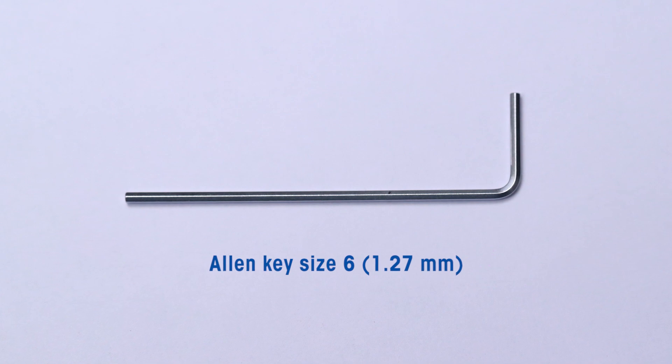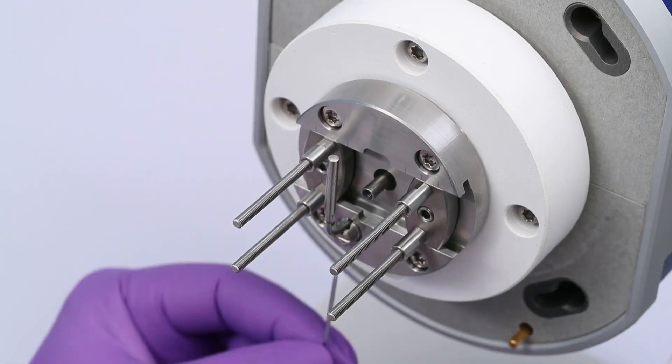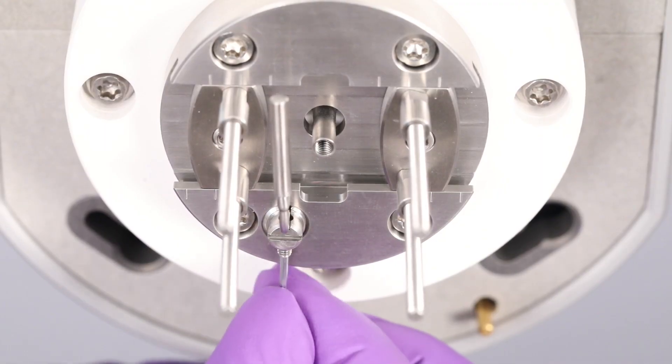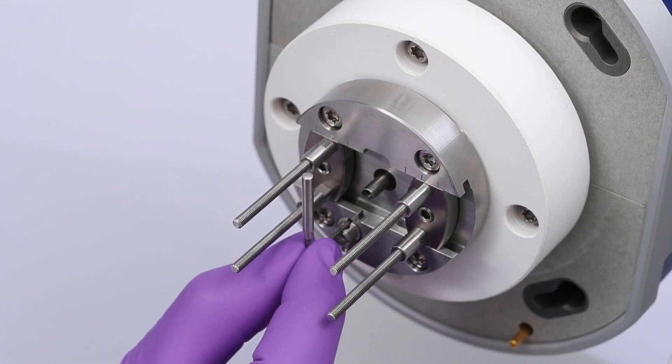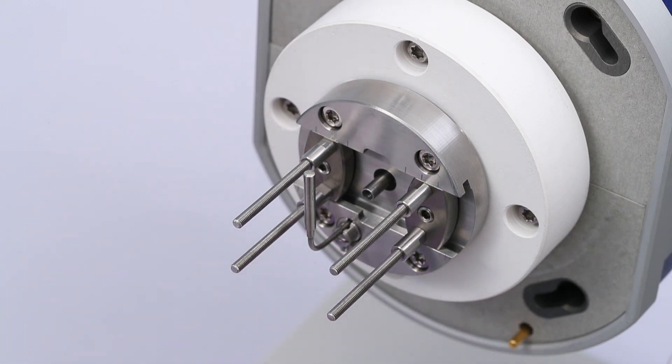Loosen the securing screw on the temperature sensor with a 1.27 mm allen key. Pull the temperature sensor sufficiently outwards to allow the fitting of the drive shaft onto the drive shaft part of the tension clamp.